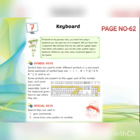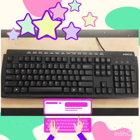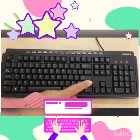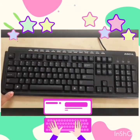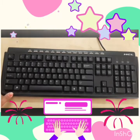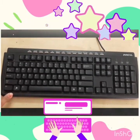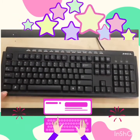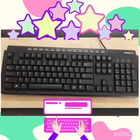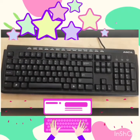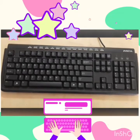Today we will do symbol keys given on your book page 62. Students, identify this device. This is a keyboard. A computer keyboard is used to type words and numbers. If you want to type your name or your mother's name, then you can use the keyboard.